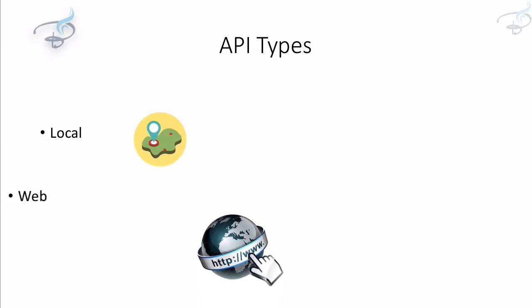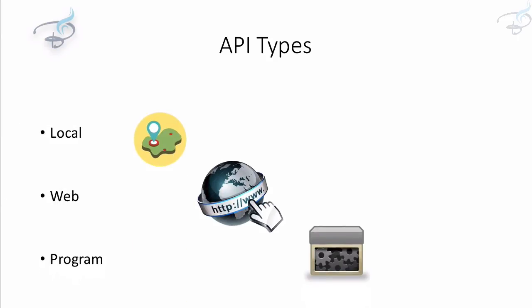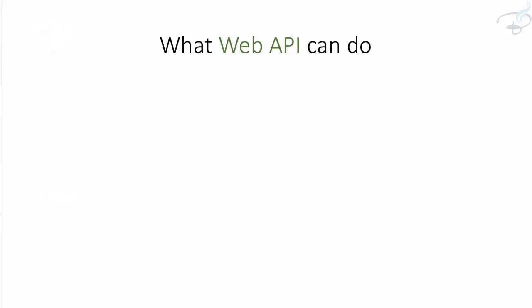An API can be local, web, or program API. But in this episode, we are only talking about the web API and what a web API can do for us.